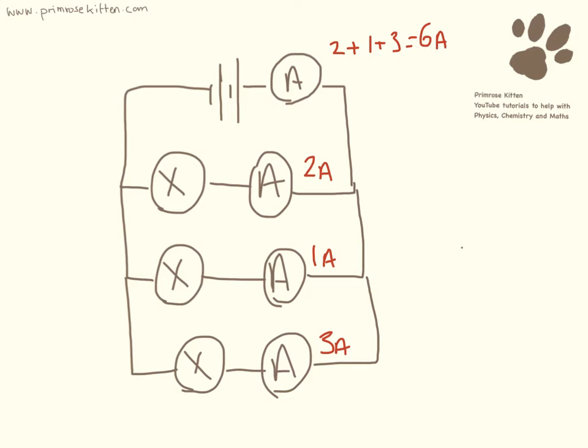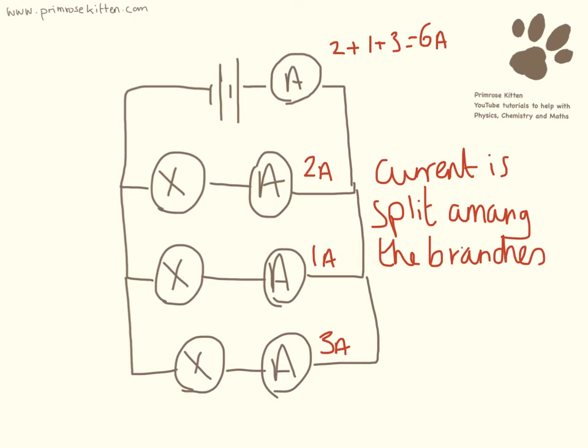the sum of all of them. So the current is split among the branches, and the total current is the sum of all the currents.